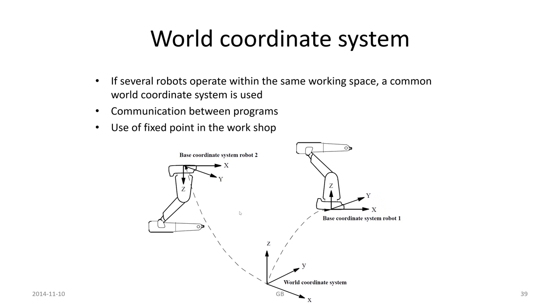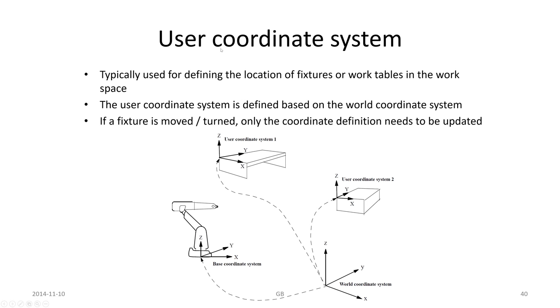Then we have world coordinate system. If several robots operate within the same workspace, a common world coordinate system is used. Like these here. So we have a world coordinate system, and then we define where is this robot, where is this robot. And they might be all oriented in different ways.